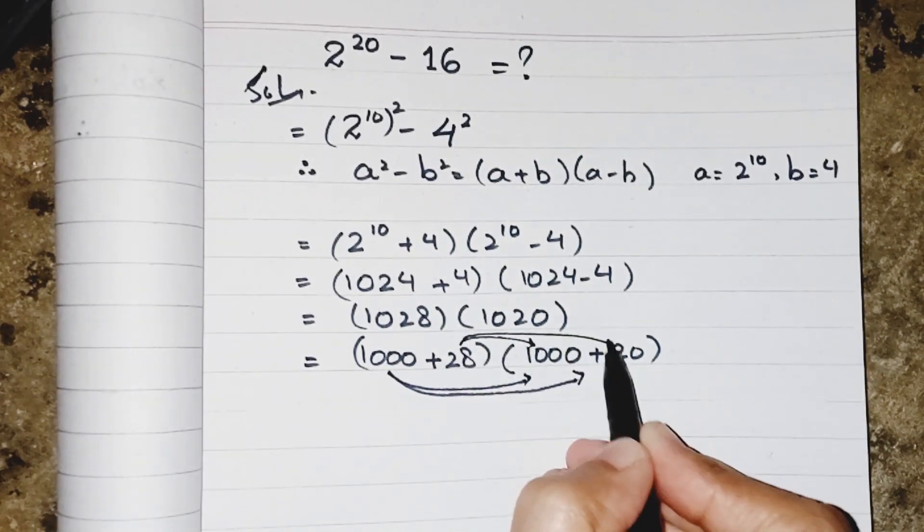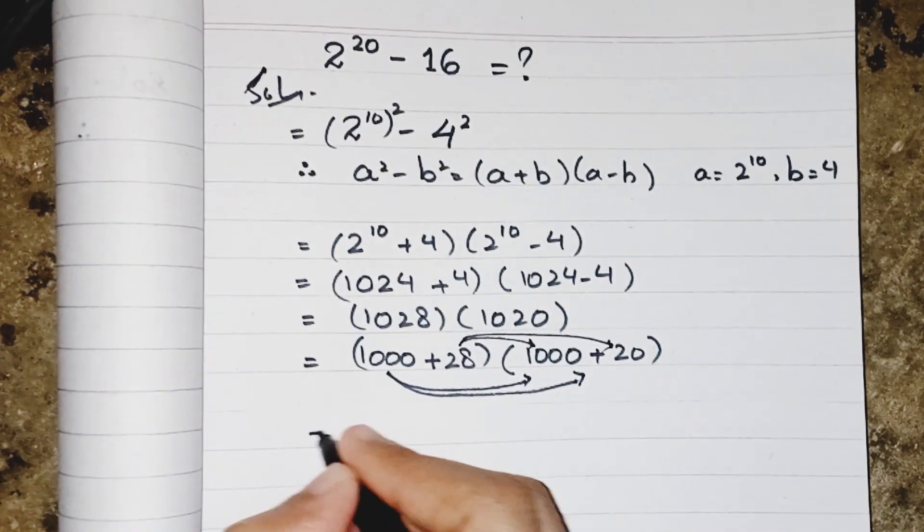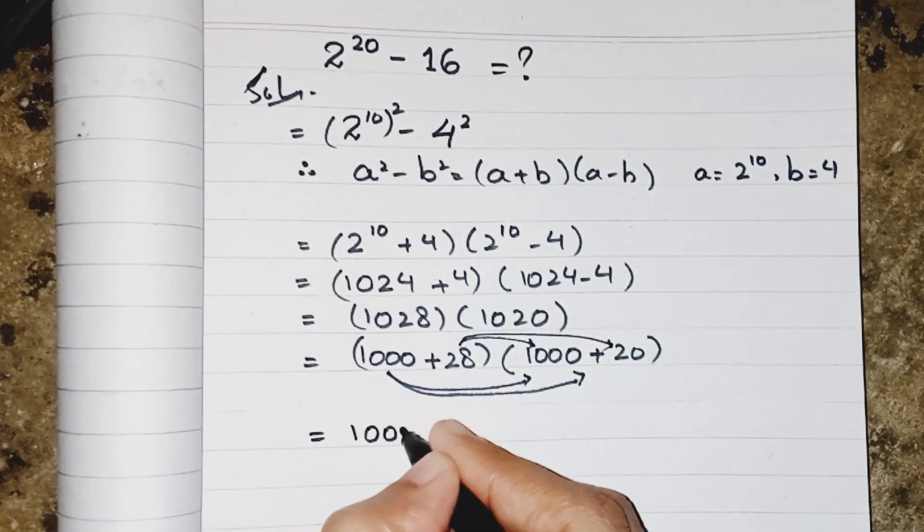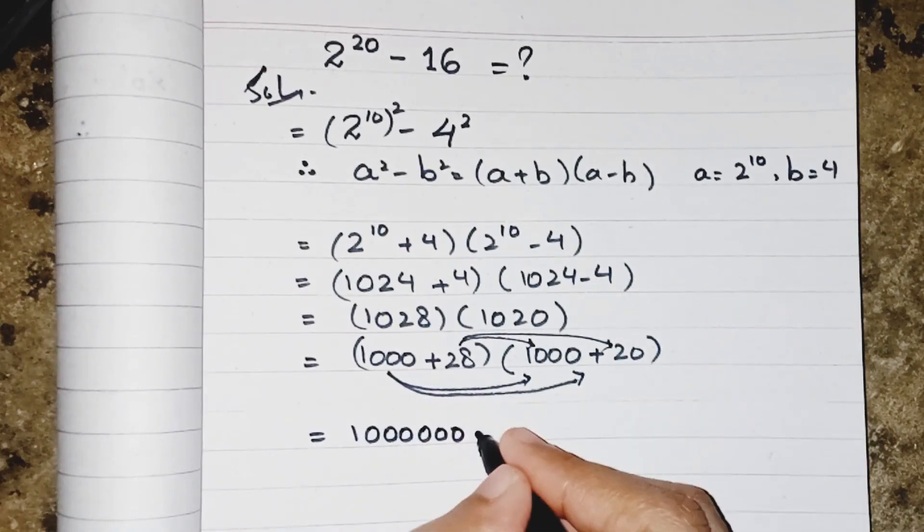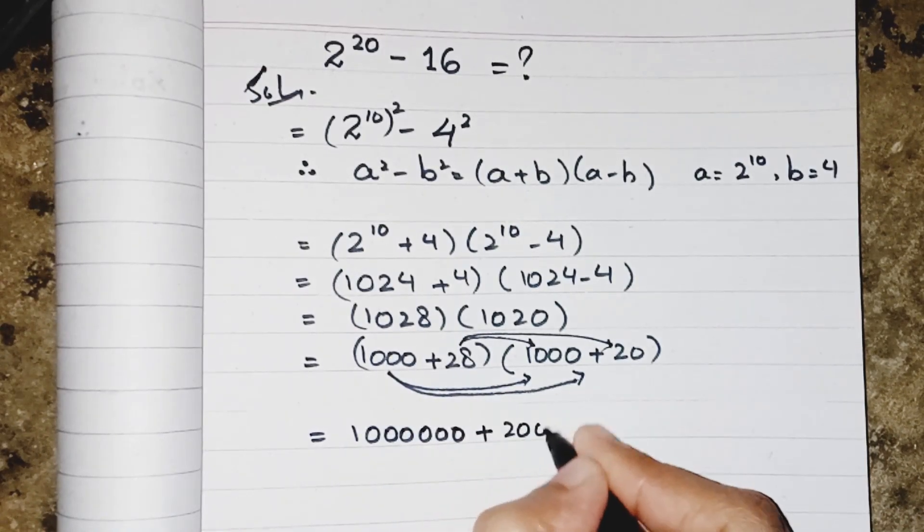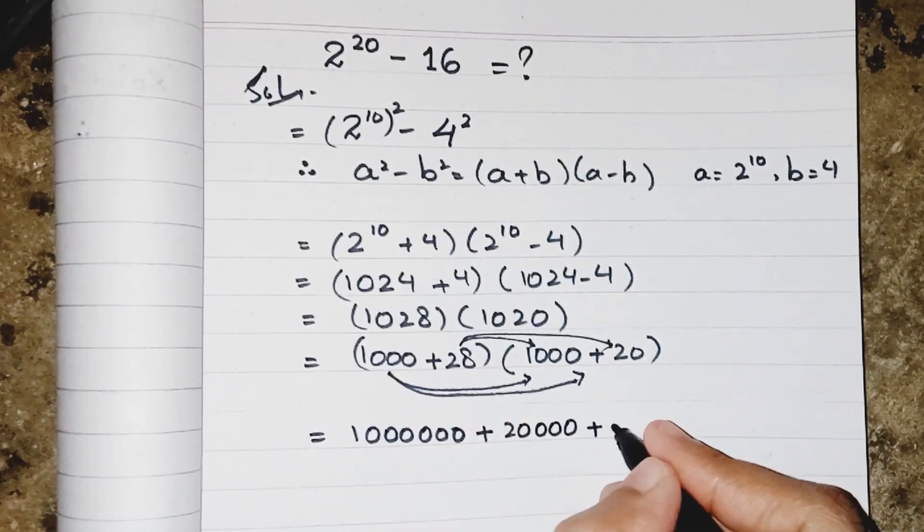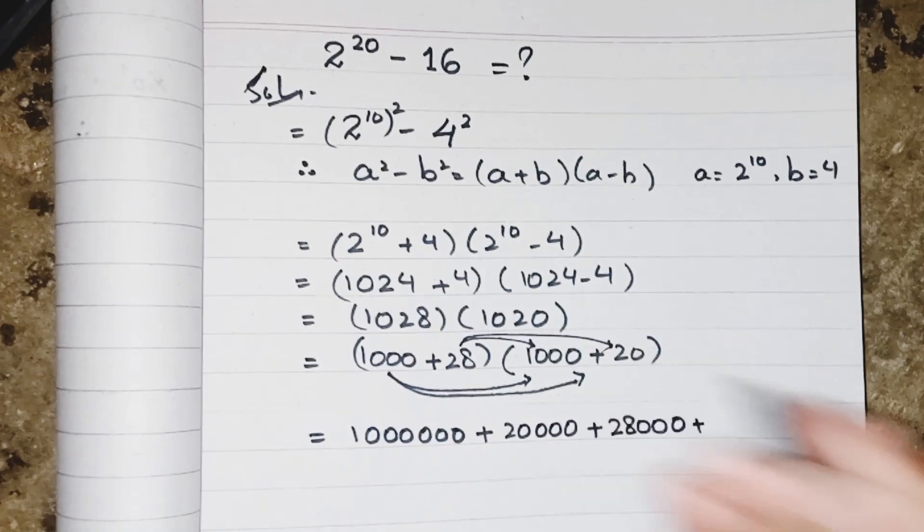1000 multiplied by 1000 results in 1,000,000 (six zeros). 1000 multiplied by 20 equals 20,000. 28 multiplied by 1000 results in 28,000. 28 multiplied by 20: 28 times 2 equals 56, and the zero from 20 gives us 560.